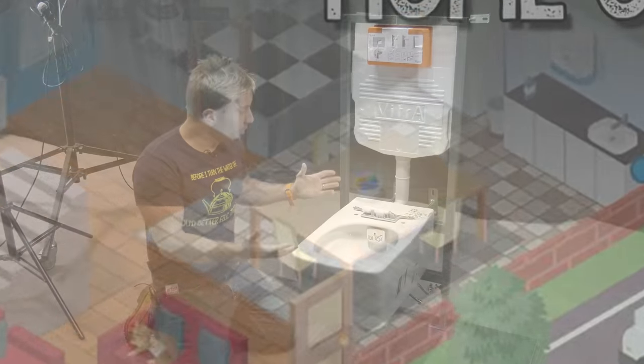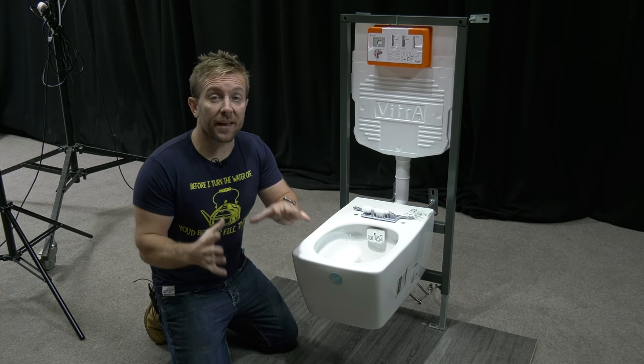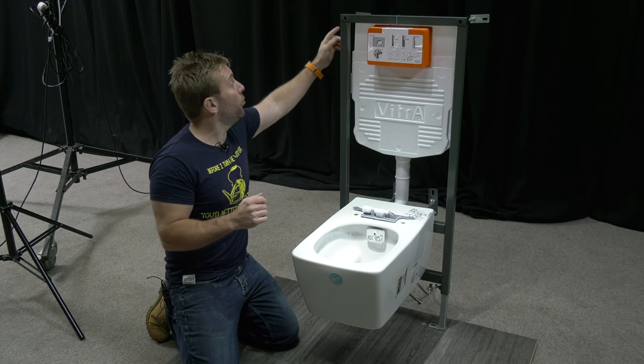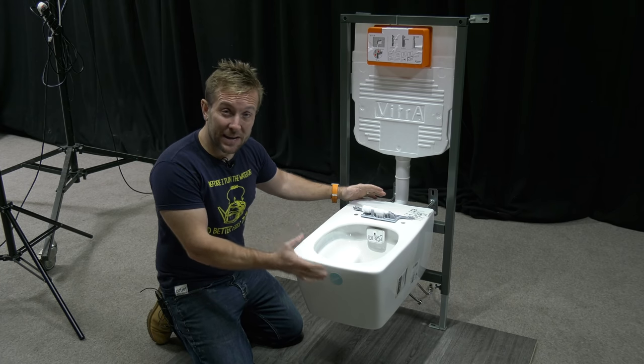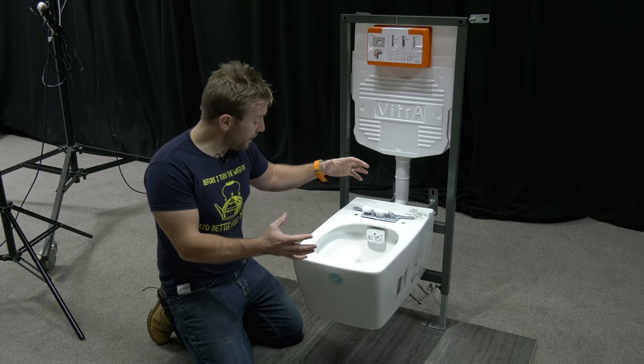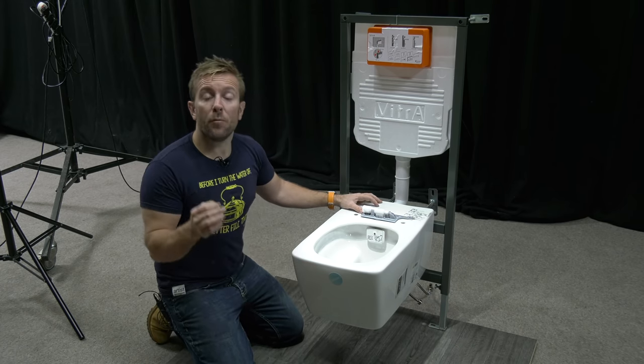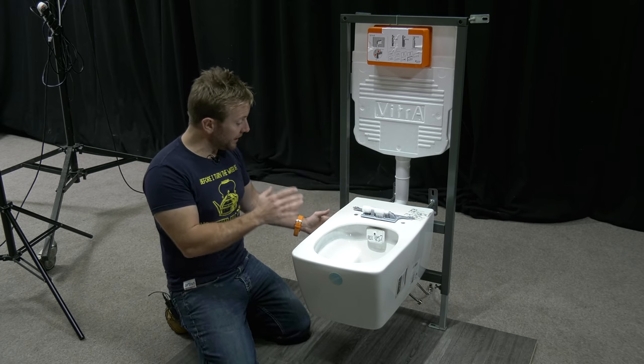This is the unit that we've got to work with. You've seen us install Vitra toilets in the past. You've got six fixing points, all of which are adjustable. Two at the top, two at the back that link straight through to the toilet itself, to the bidet toilet, meaning that it's going to be really firmly fixed. It's not going to move anywhere. And then two floor plate fixings down there as well.